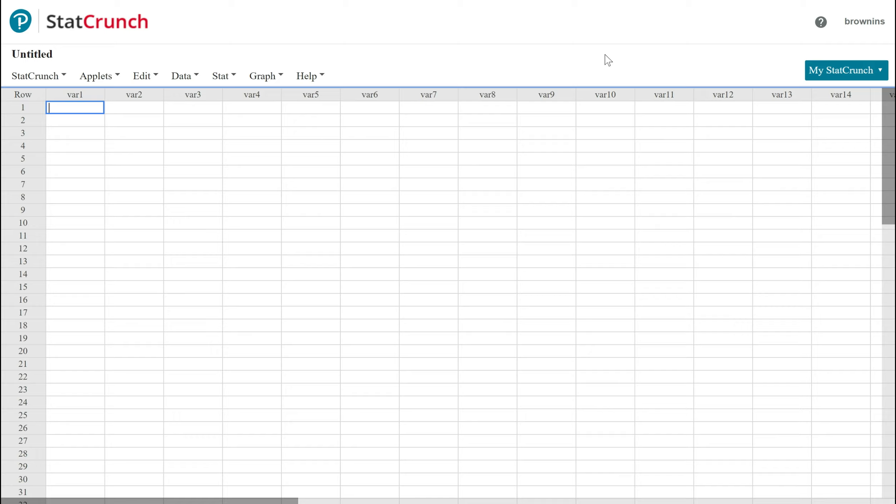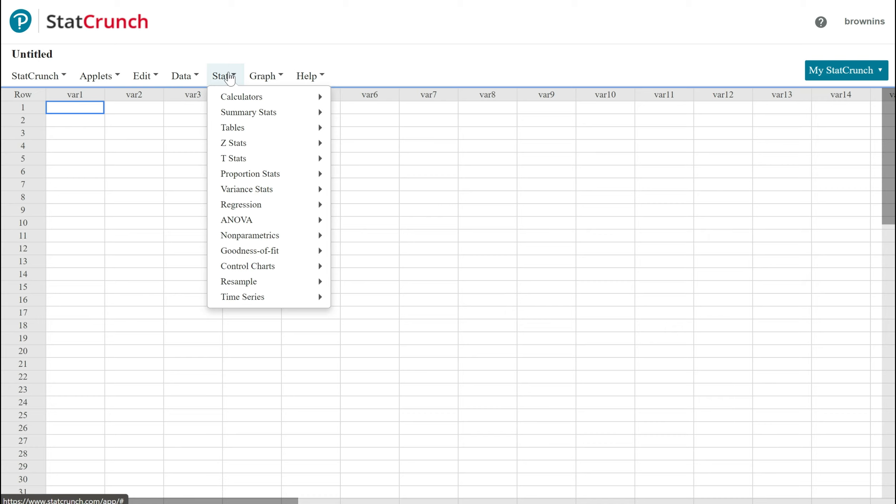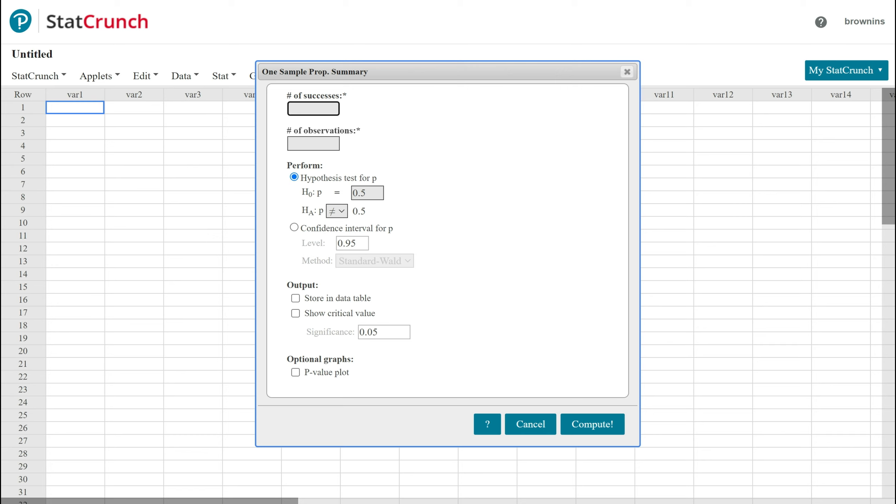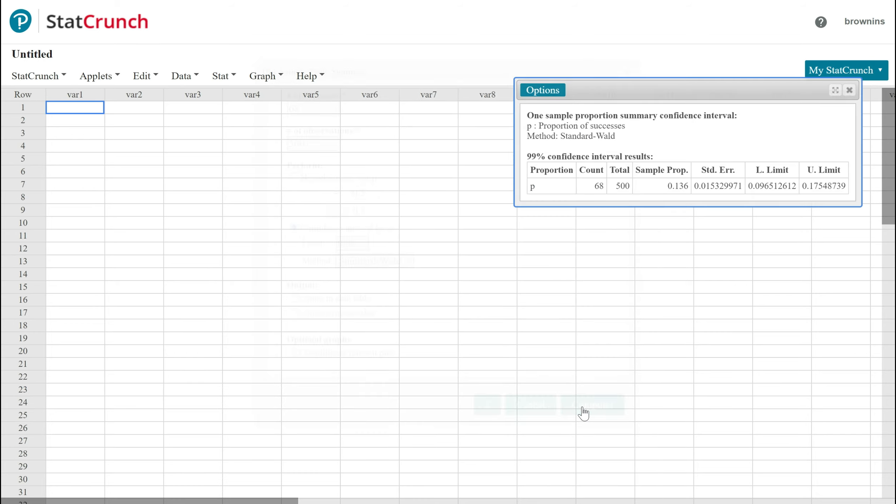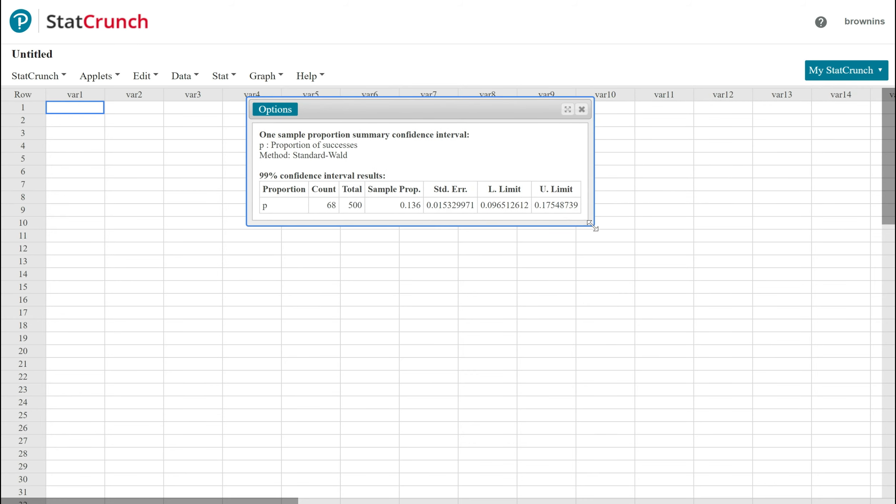Okay so using our chosen technology of StatCrunch will make it easy for us, so we work through it by going to the stat tab, we go down to proportion stats, go over to one sample and then here with summary because our problem gave us the data summarized in the quick short table. So I enter that number of successes we said was 68, number of observations was 500. We just need to go down to confidence interval, click on confidence interval for p. The level is at 95 percent right now but our problem said 99 so we just change it to 0.99. We hit compute and there you can see the output that's given by StatCrunch.